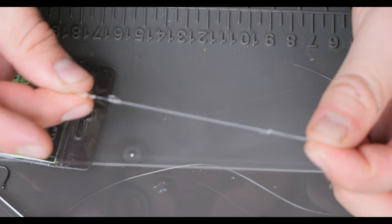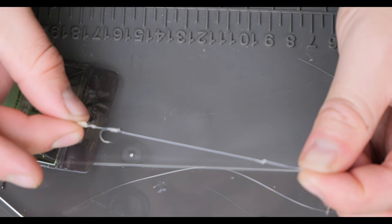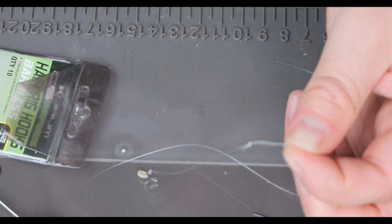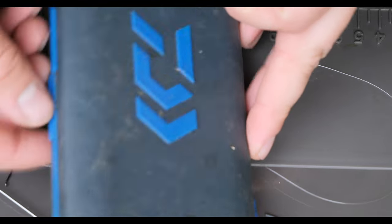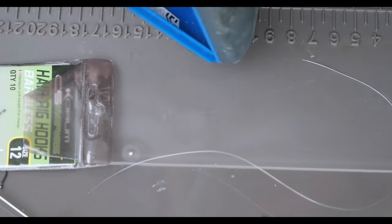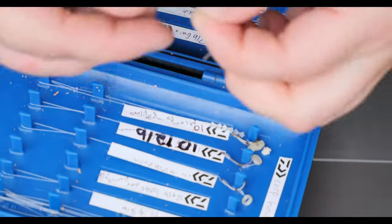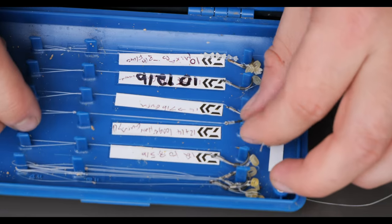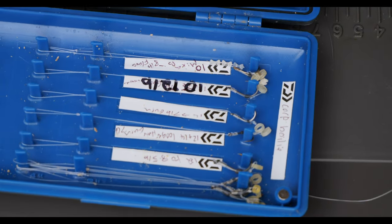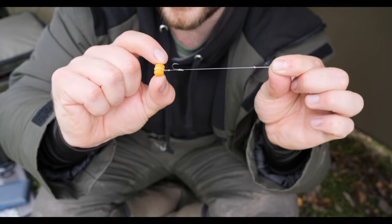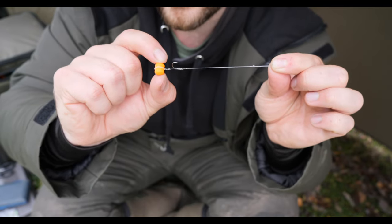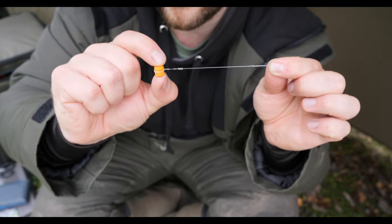That is our method feeder hook link tied. So if we put it in the case now, it should be perfect because we've measured it against the case. There we go, that's perfect. Well you can see how using that case as a tool allows you to tie a perfect size hook link every single time.